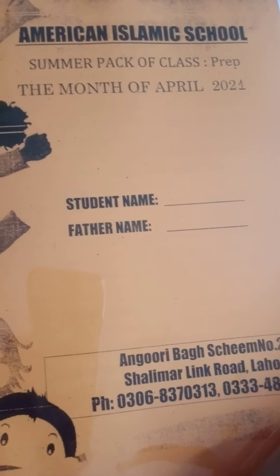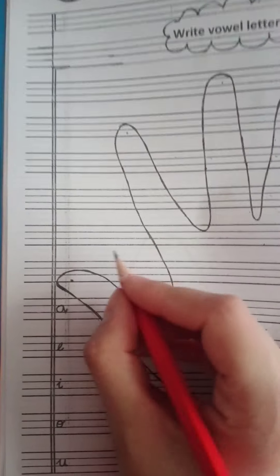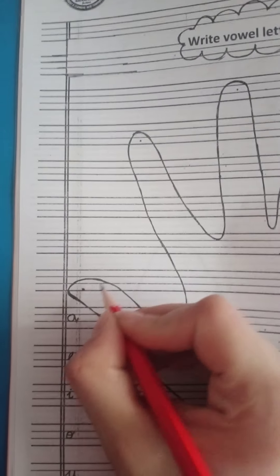Next page, we have write vowel letters. Here we write vowel letters: A, E, I, O, U. Here I have mentioned, A, E, I, O, U. What we call the vowel letters. The dots are mentioned.